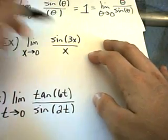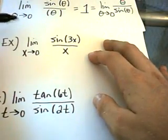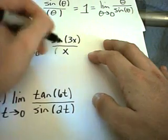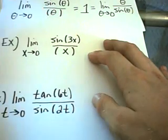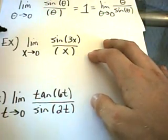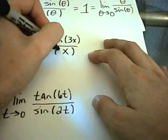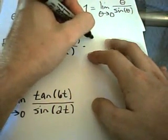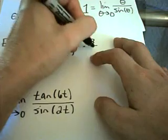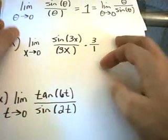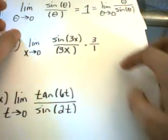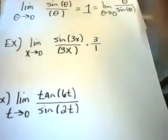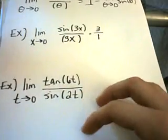Well, in this case, I have 3x on top. I would like to have a 3x in the bottom. Well, let's just make that happen. I'll multiply the denominator by three, but if I multiply the denominator by three, I also have to multiply the numerator by three. Okay, so there's my extra three. Notice I could just cancel those out and be back to my original problem.